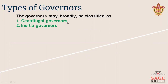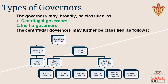Governors are classified into centrifugal governors and inertia governors. Centrifugal governors are further divided into pendulum type governors and loaded type governors. Loaded type governors are further divided into dead weight governors and spring controlled governors. Dead weight governors include the Porter governor and Proell governor. Spring controlled governors include the Hartnell governor, Wilson-Hartnell governor, and Pickering governor.